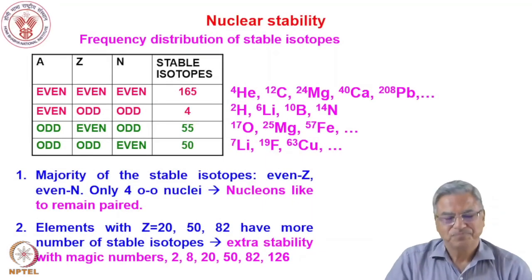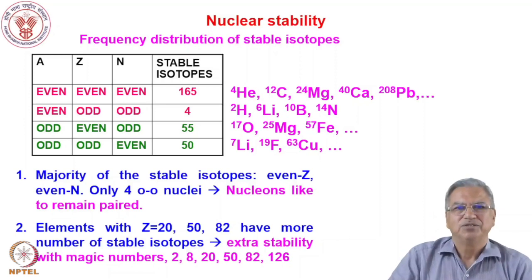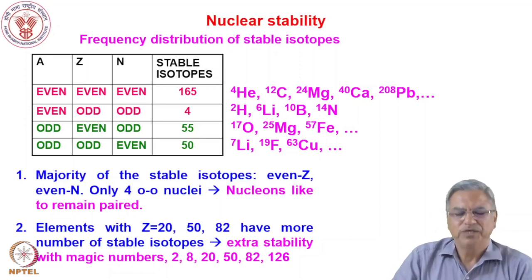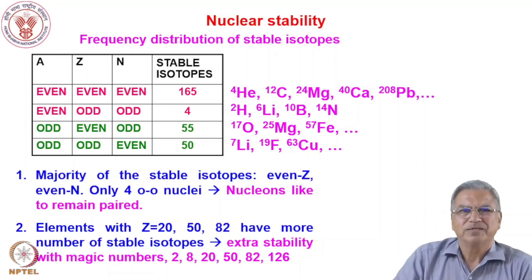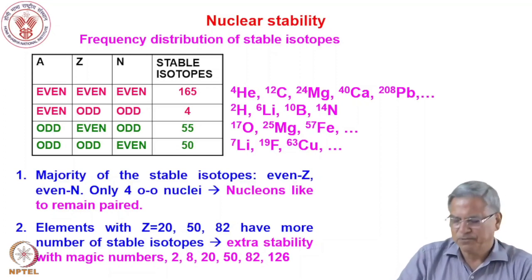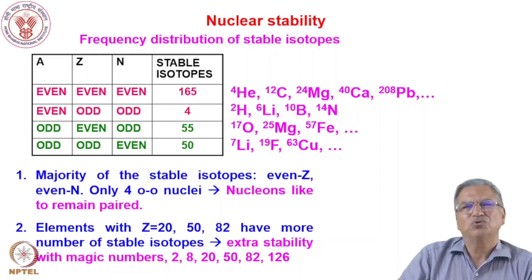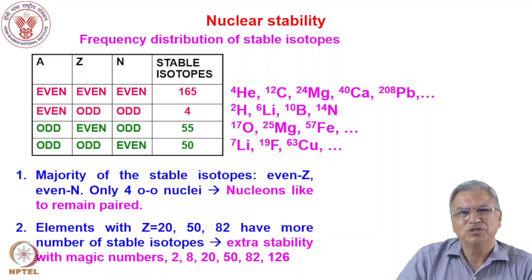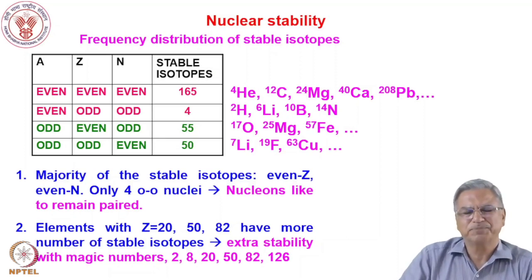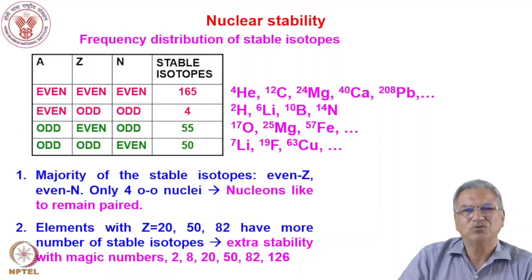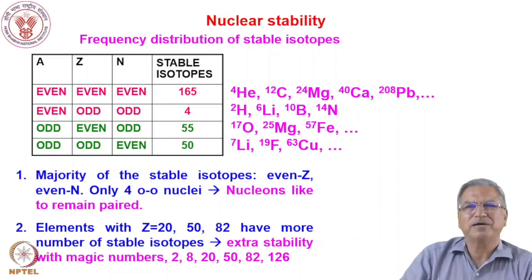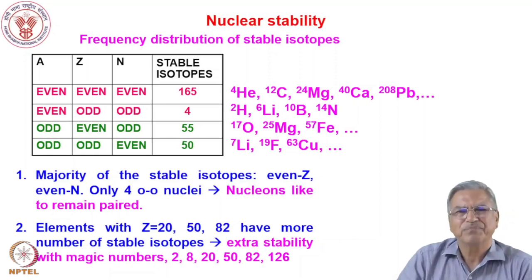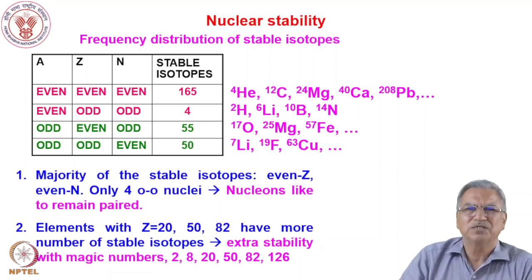Hello everyone. In the previous lecture, we discussed about the discovery of nucleus, proton, neutron, and also how the idea about the nuclear radius was obtained from experiments on scattering of high energy electrons and other heavy charged particles by the nuclei. We also discussed about nuclear mass and binding energy.